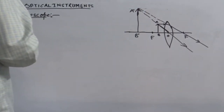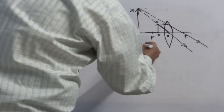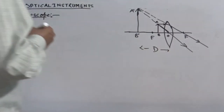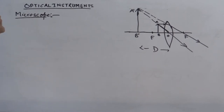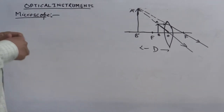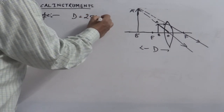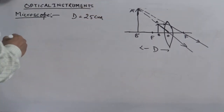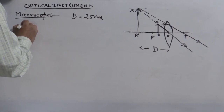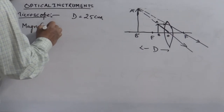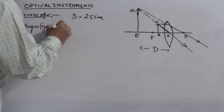This image is obtained at the least distance of distinct vision. The least distance of distinct vision is the distance at which a normal human eye can see without any stress, and its value is 25 centimeters — it is a fixed value. Now we will calculate the magnifying power of the simple microscope.